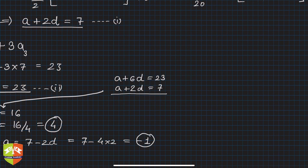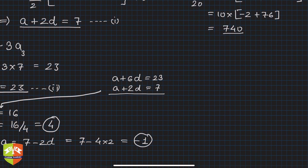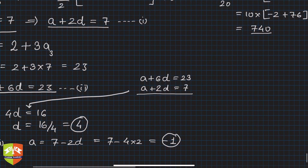So what will this be? This is 10 into minus 2 plus 76, which is 74 into 10, equals 740. This is the solution. So sum of first 20 terms is 740.